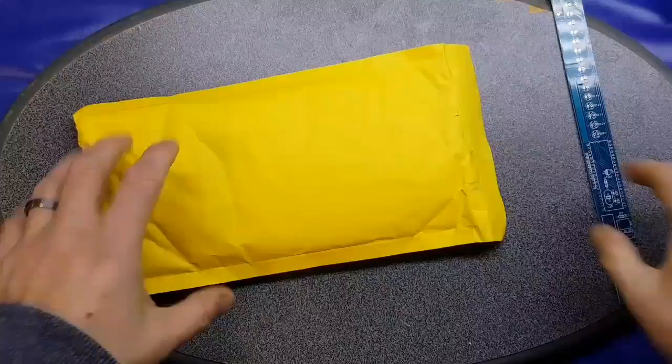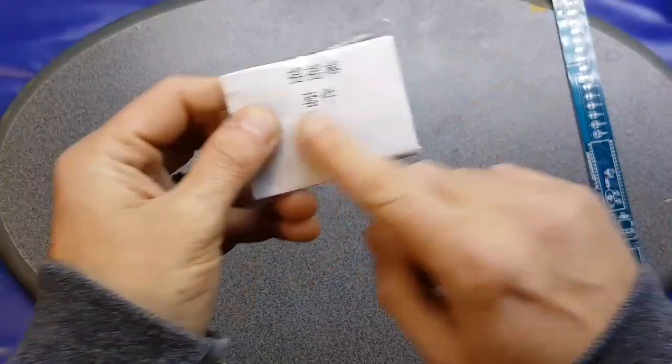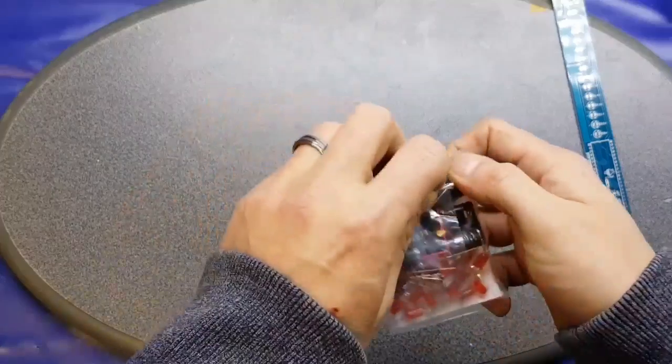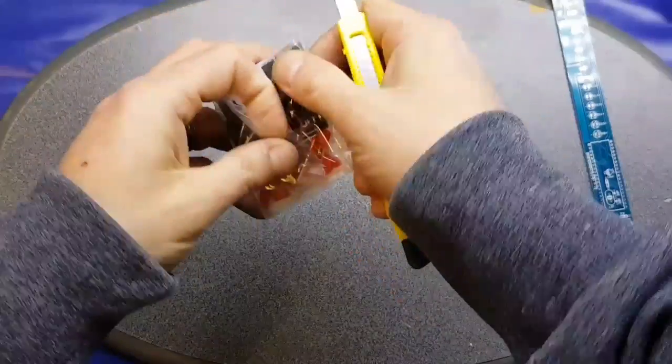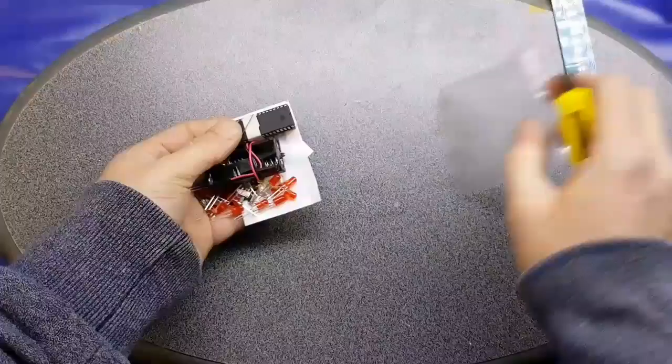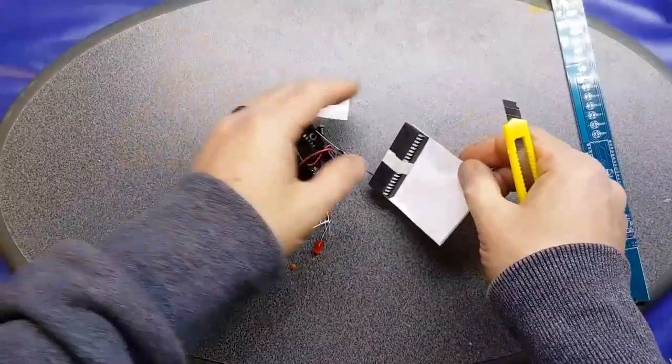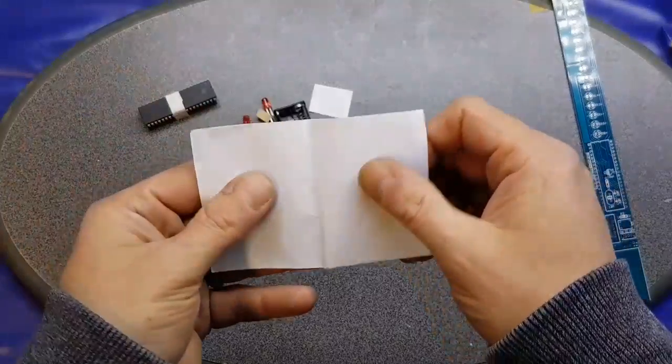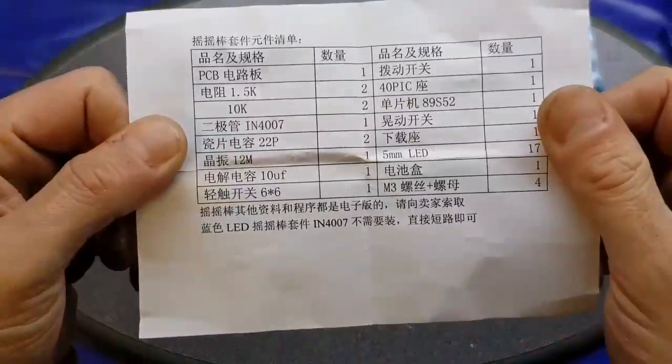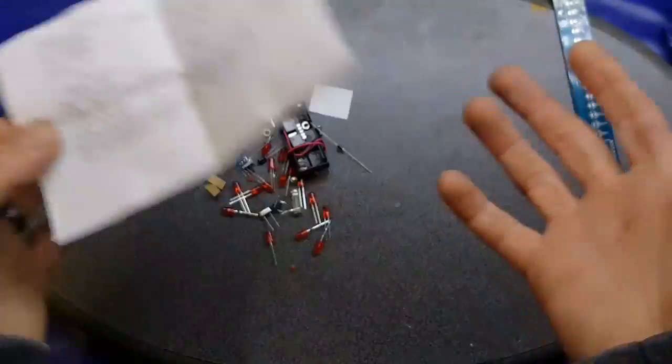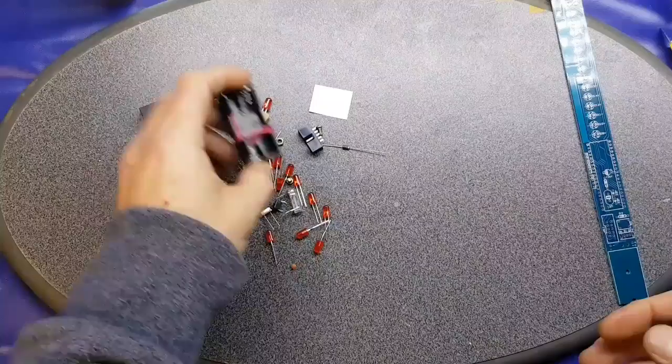So, that's the PCB. Let's have a look at the components. Now we do get instructions. We do have some Asian text on here, Chinese text. So whether there's any English in it, I'm not sure. We've got some Chinese with a list of components and that is it. There's no instructions at all. So hopefully some of you will find this useful if you're building it yourself.